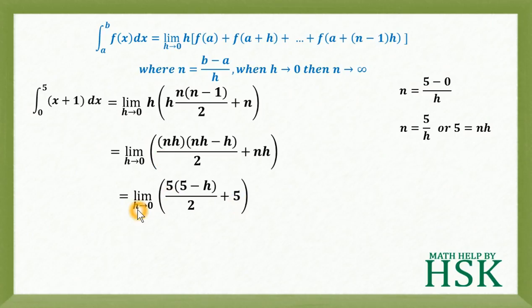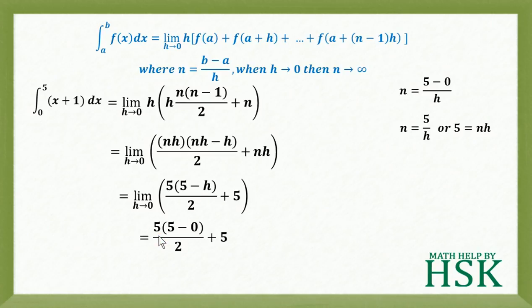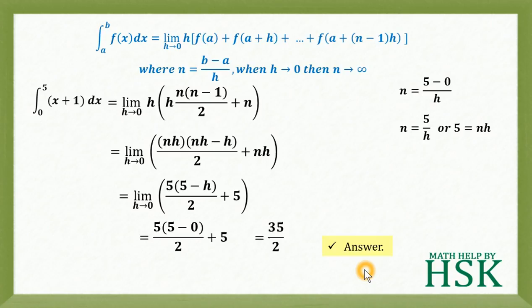Now there is only one variable h. Placing h → 0: we get 5(5 − 0)/2 + 5 = 25/2 + 5 = 35/2. This is the required answer.